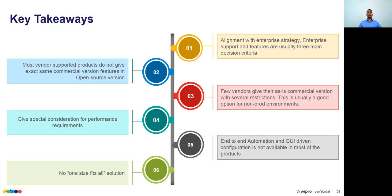End-to-end automation and GUI-driven configuration is often not available — a mix of GUI and command line becomes a nightmare in real life. Finally, there is no one-size-fits-all solution. Even with 40 criteria, you will not find a single product that fits all of them. There will always be gaps — in performance, manageability, or feature coverage. Accept that trade-offs are inevitable.